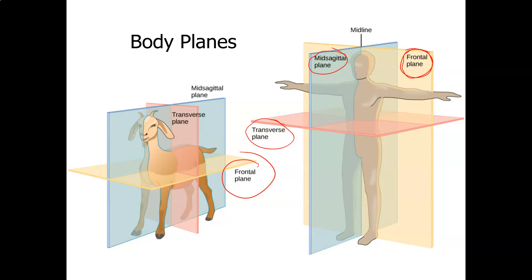When looking at a goat, which has all four legs on the ground, the frontal plane is perpendicular to the one in the human. It divides the goat into a portion with a head and a portion with the legs. The mid-sagittal plane still goes right through the two eyes, with each half having two legs. The transverse plane, however, would be perpendicular to the human's — the cross section through the abdominal area would be vertical instead of horizontal.